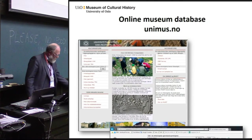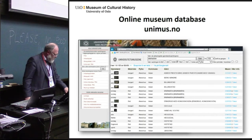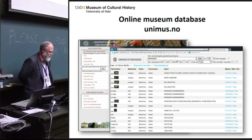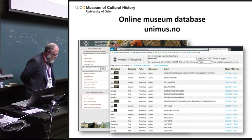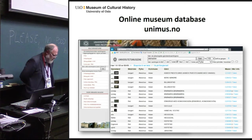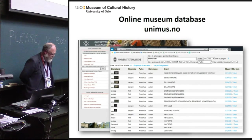The online museum database is the result of a national cooperation among the five archaeological museums in Norway — all the major archaeological collections in Norway can be queried through this page. At present, more than 985,000 entries from the database are published online, and the published Stone Age finds from our museum count more than 82,000. The museums use this database for cataloguing all new acquisitions, so the number of entries are constantly increasing.